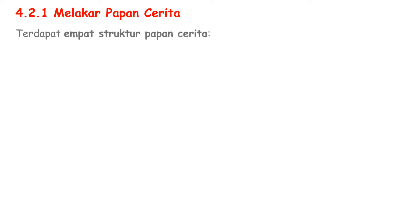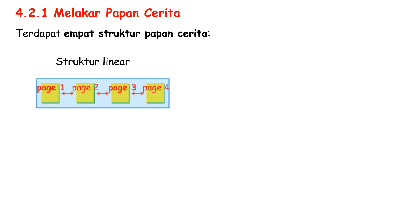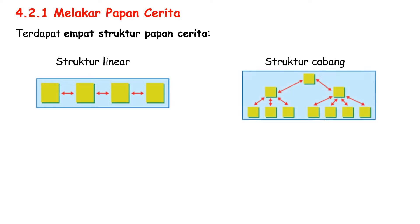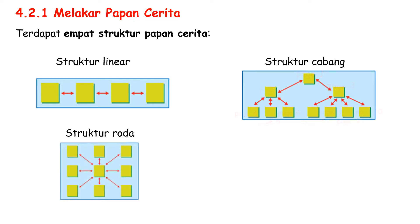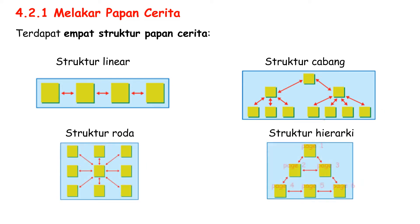There are 4 structures of Papan Cerita: 1. Structure Linear, 2. Structure Cabang, 3. Structure Roda, 4. Structure Hierarchy.